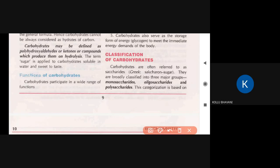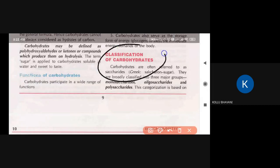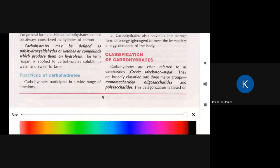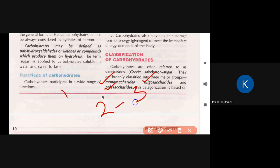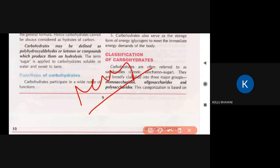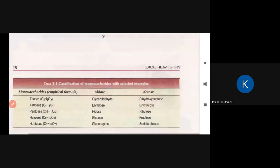Good morning students. Today I am going to review the first class of a 611-20. Carbohydrates are often referred to as saccharides — the Greek word meaning sugar. They are broadly classified into three major groups: monosaccharides, oligosaccharides, and polysaccharides. Monosaccharides are single units, oligosaccharides have more than one unit (two, three, four), and polysaccharides are many monosaccharide units.